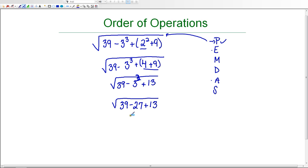Now, I've been able to get rid of the exponent, and I have no multiplication or division. It's addition or subtraction. And I know that I can evaluate that in order from left to right. 39 minus 27 is 12. And 12 plus 13 is 25.